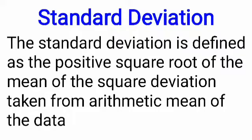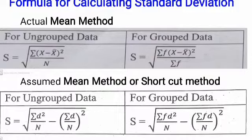The standard deviation is clearly understood through examples and formulas. There are three methods to calculate standard deviation: first, the actual mean method; second, the assumed mean method or shortcut method; and third, the step deviation method. For the actual mean method, there are two formulas. For ungrouped data: standard deviation equals the square root of sigma(x minus x̄) squared divided by n. For grouped data: it equals the square root of sigma f(x minus x̄) squared divided by sigma f or n. The only difference between the two equations is the frequency f.